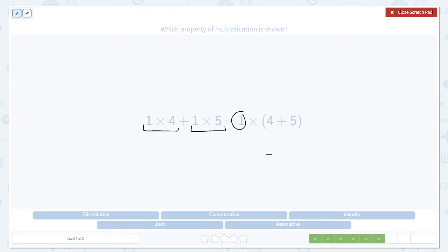On the left hand side, 1 times 4 is 4, and 1 times 5 is 5. On the right hand side, we have 1 times 4 plus 5, which is 9. So we have 1 times 9, which is just 9. The same as the 4 plus 5 we get from the left.